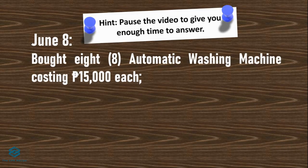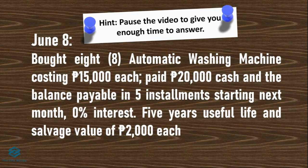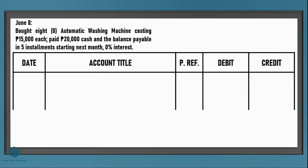On June 8, we bought eight automatic washing machines costing 15,000 pesos each. We paid 20,000 pesos cash as a down payment, and the balance will be payable in five installments starting next month with 0% interest. Let's put June 8 under the date column. We bought washing machines, so from the chart of accounts, the most appropriate account is 'Laundromat Machinery' — debit that. Since we paid cash and the balance is in installments, we'll have two credits — this is called a compound entry, which is an entry with more than one debit or more than one credit.